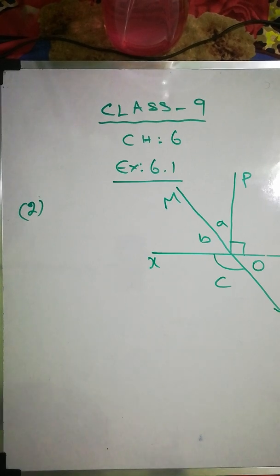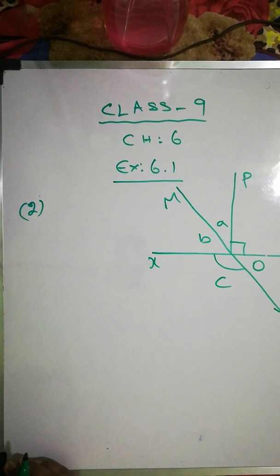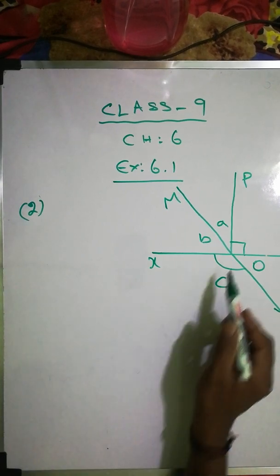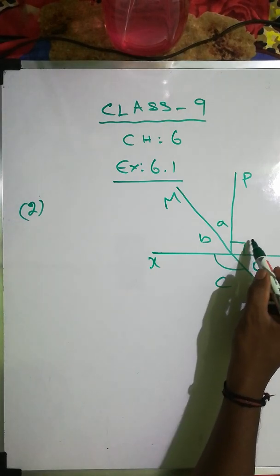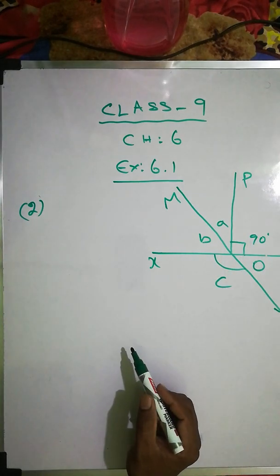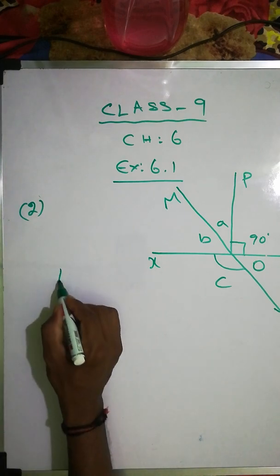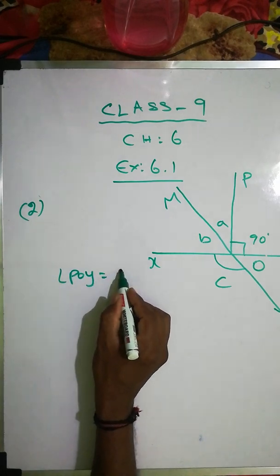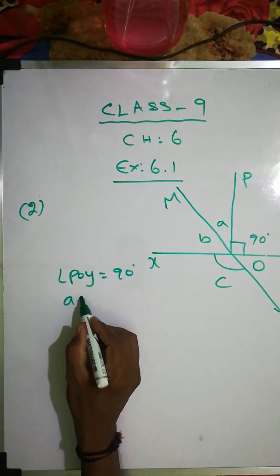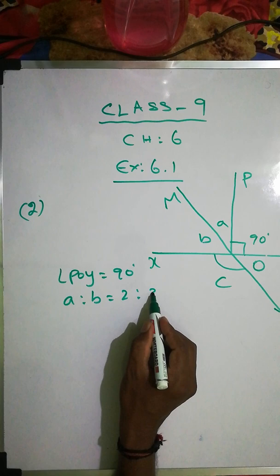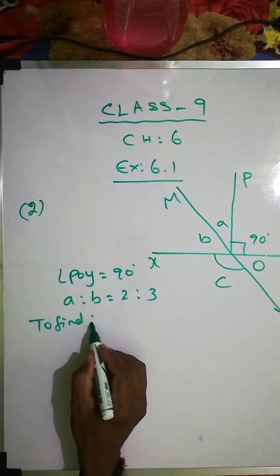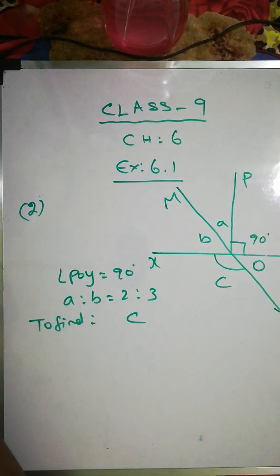Question number 2. In figure 6.16, lines XY and MN intersect at O. Angle POY is given as 90 degrees and A is to B is 2 is to 3. We have to find angle C.